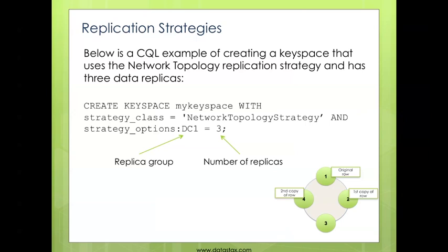What you're looking at now is a CQL — a Cassandra Query Language — example of creating a keyspace in Cassandra that uses the network topology strategy, assigns a replica group (in this case DC1) and the number of replicas, three. So you're going to have the original row stored in your database cluster and two copies of that data stored on other nodes in your database cluster.